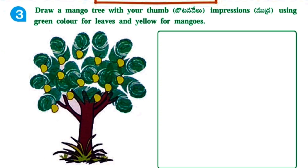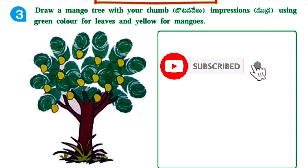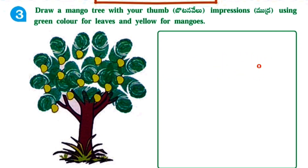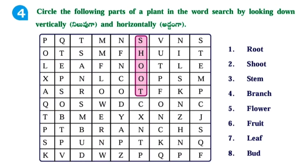Next, draw a mango tree with your thumb impressions using green color for leaves and yellow for mangoes. You have to draw a mango tree here using those colors.